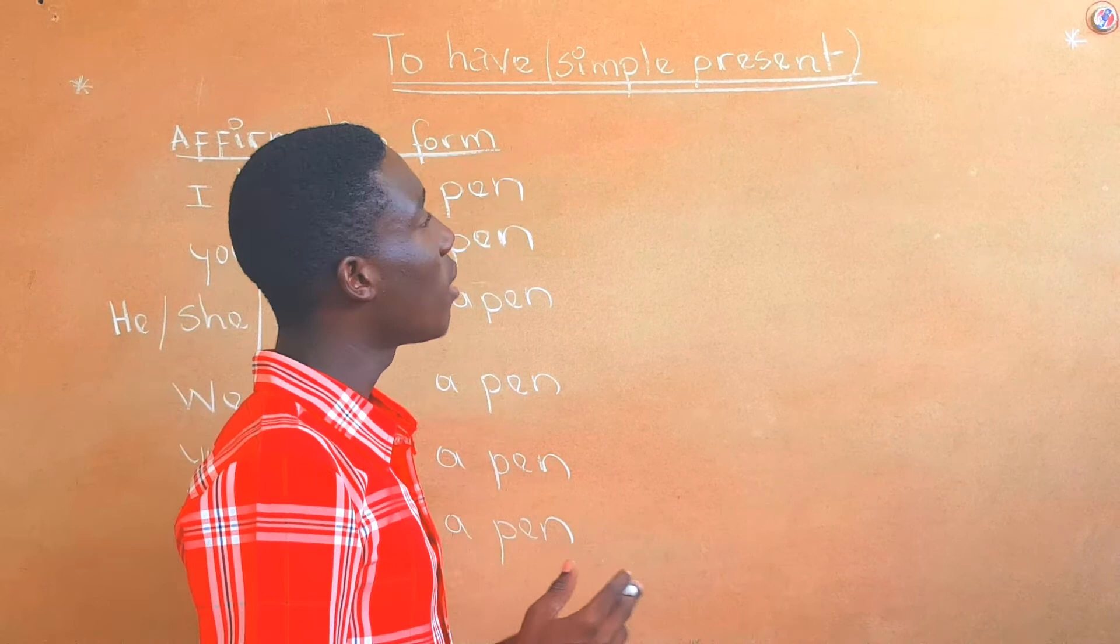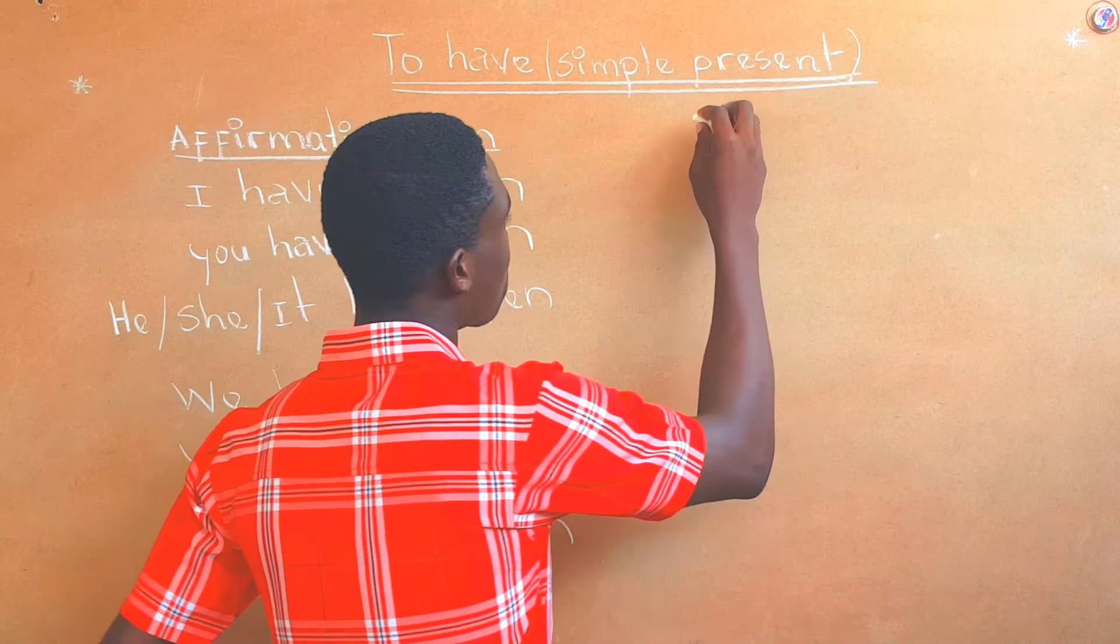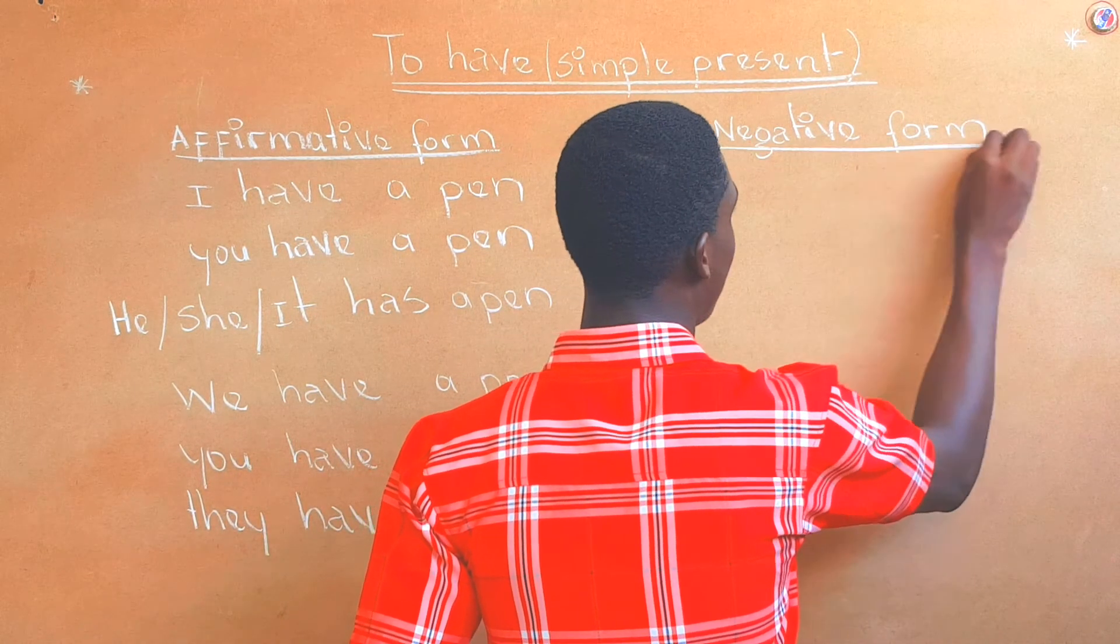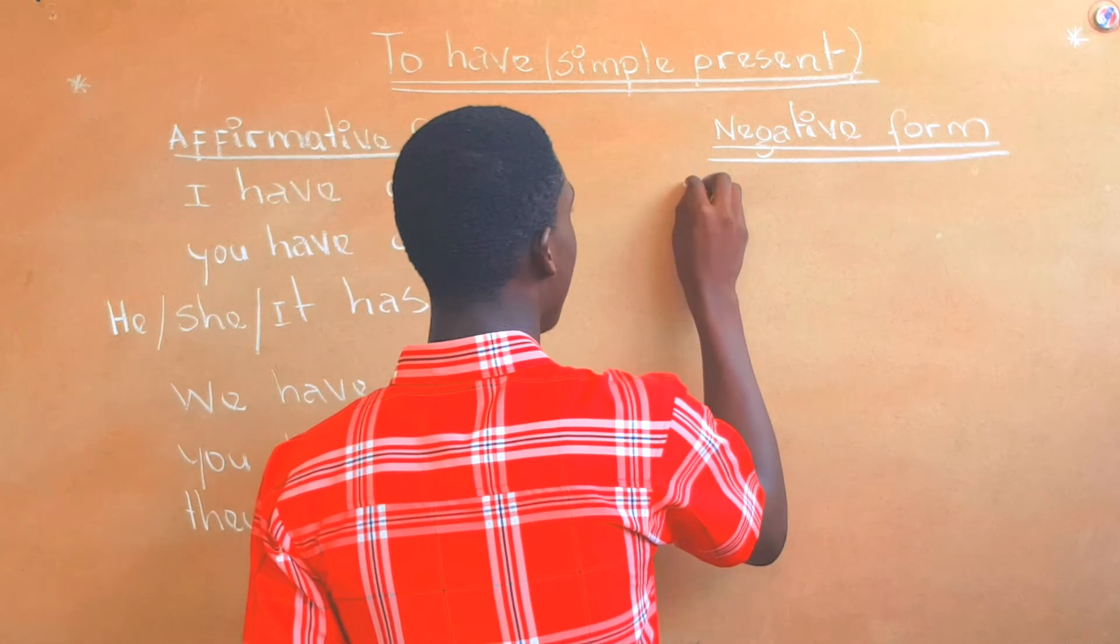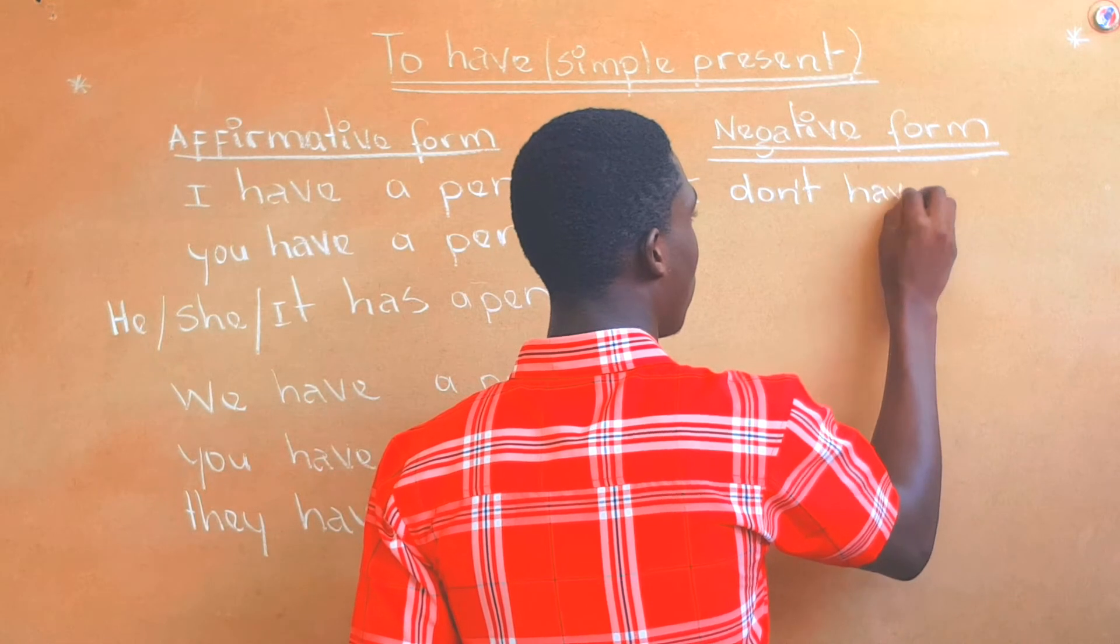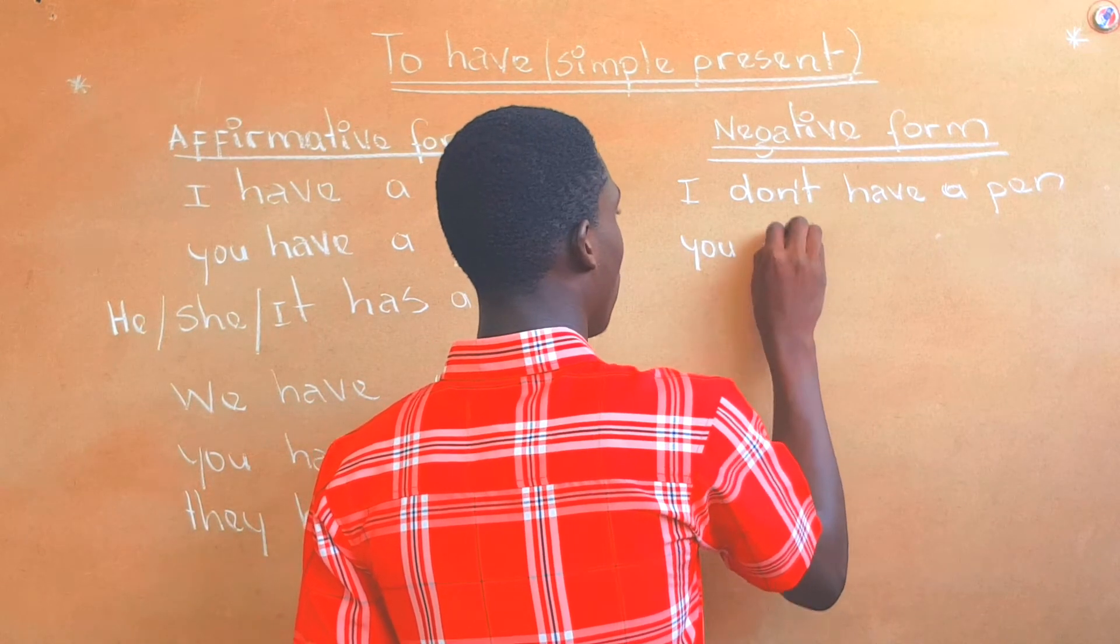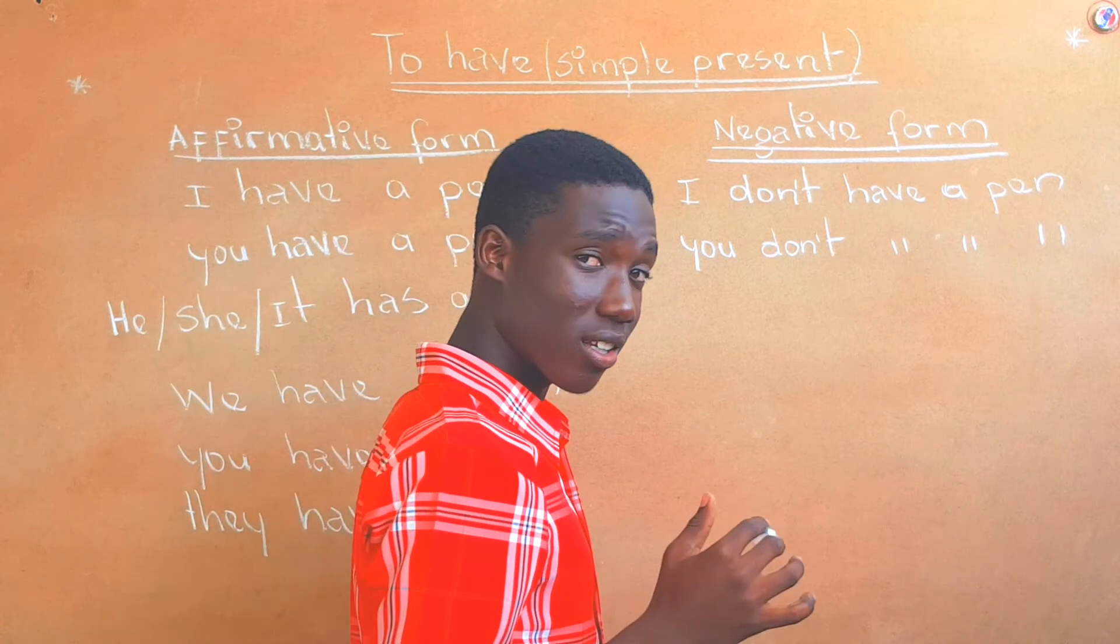Now I'm going to give you the negative form of the verb to have in simple present. For negative form we have don't. I say I don't have a pen. You don't have a pen.